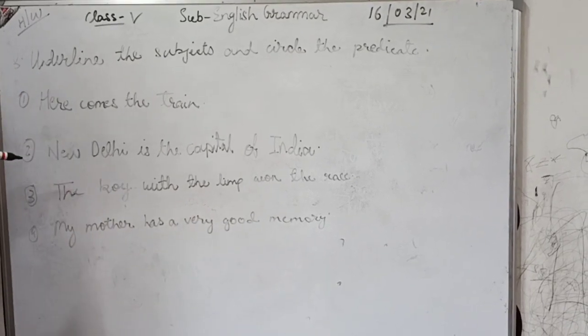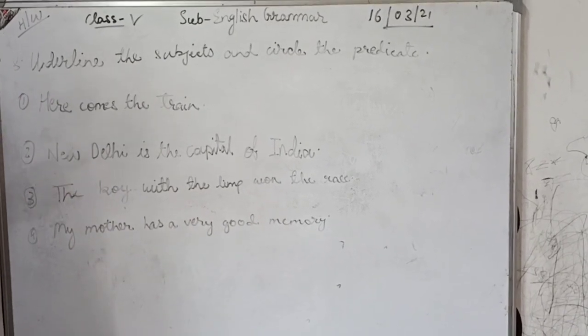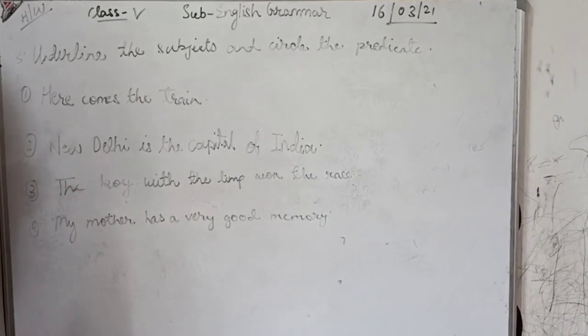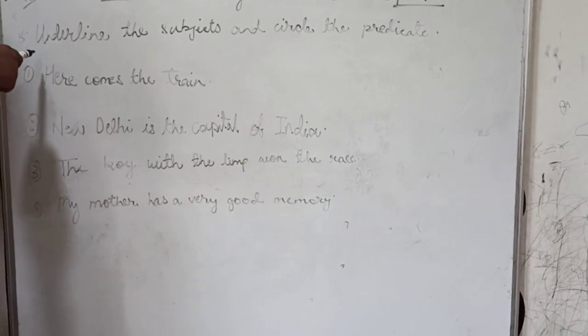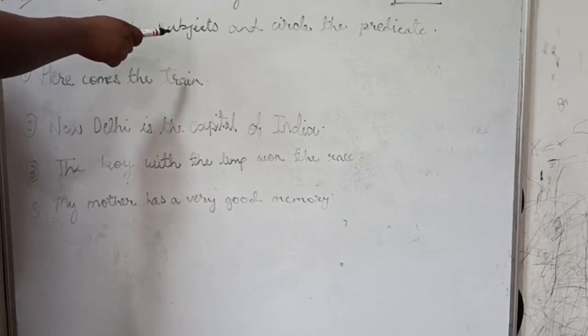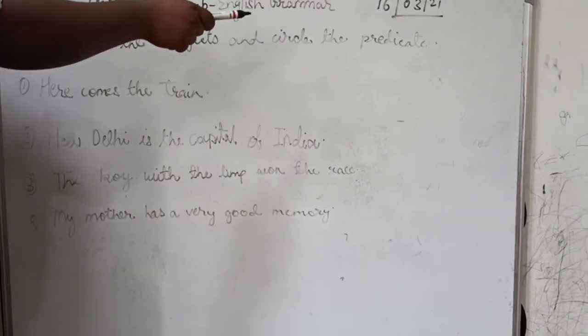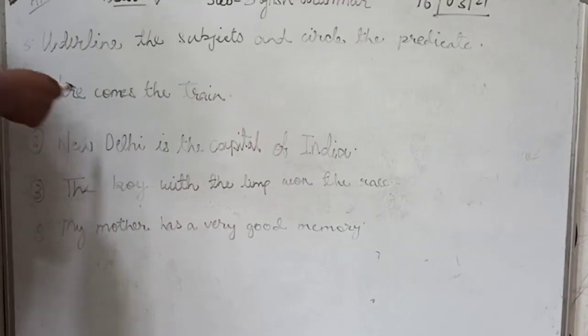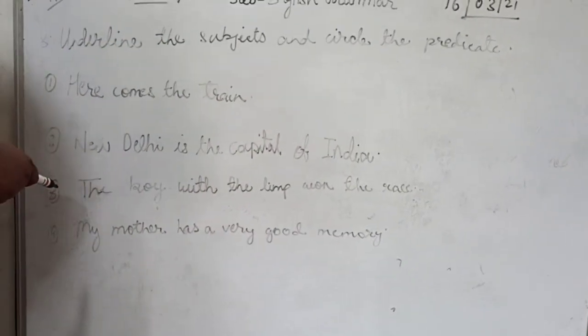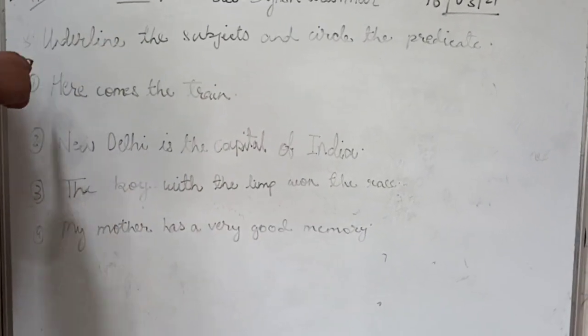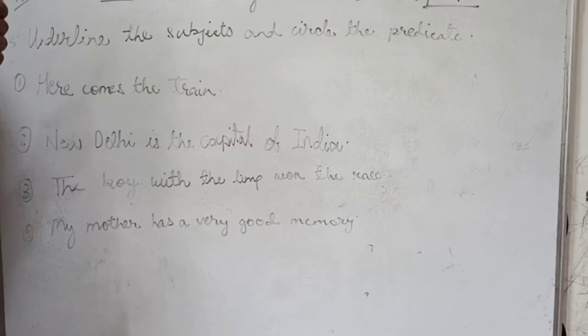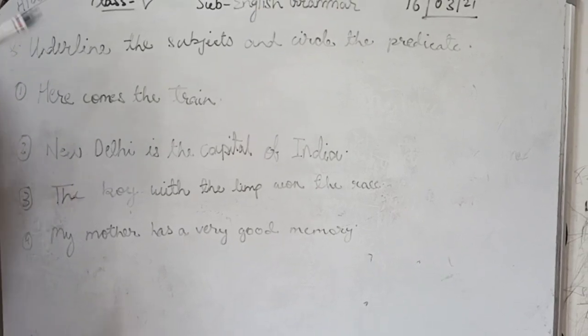My dear students, this is a question for homework. So please try to listen to the question carefully. The question is: underline the subject and circle the predicate. Here, the question is given and we have to underline the subject and circle the predicate.